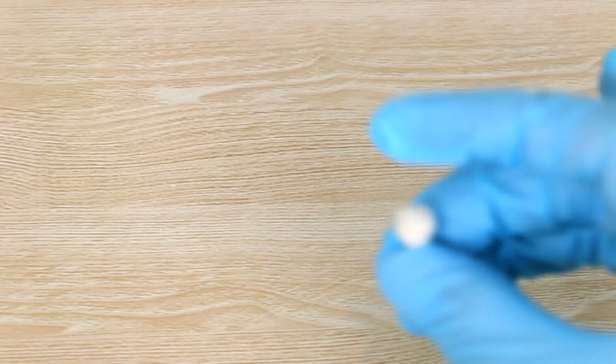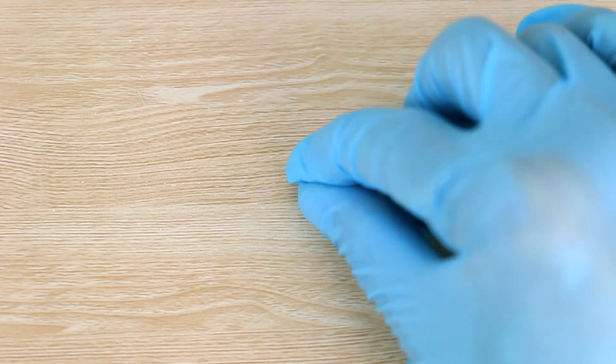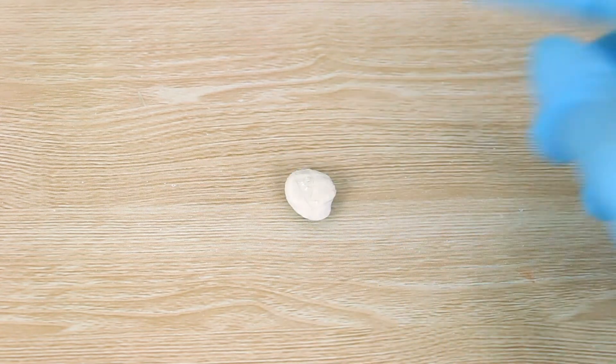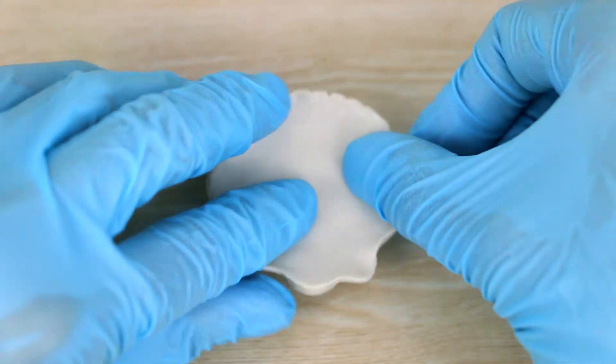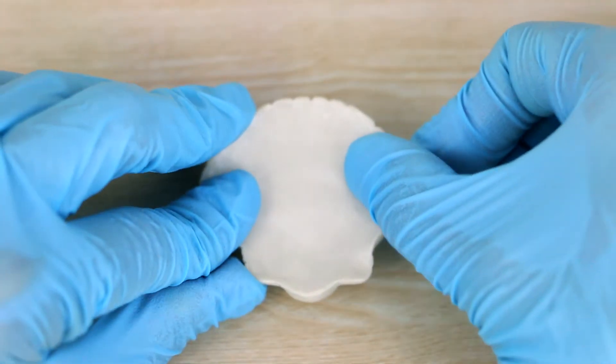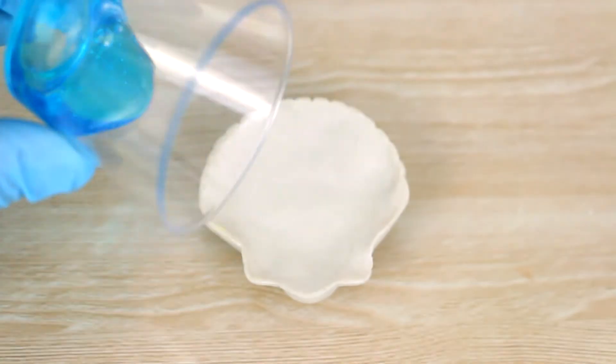Once it's a uniform color, I'm sticking the shell down onto my work surface with some blue tack, and then pouring the resin into the shell.